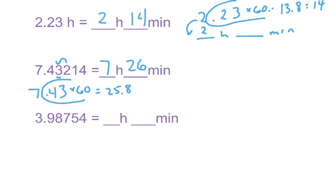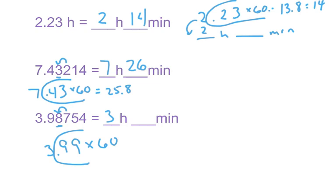The last conversion example: if you have 3.98754, round to the hundredths place. The 7 makes the 8 round up, so you get 3.99. The 3 stays as the hours. Take that .99 times 60, and you get 59.4 minutes, which rounds to 59 minutes.